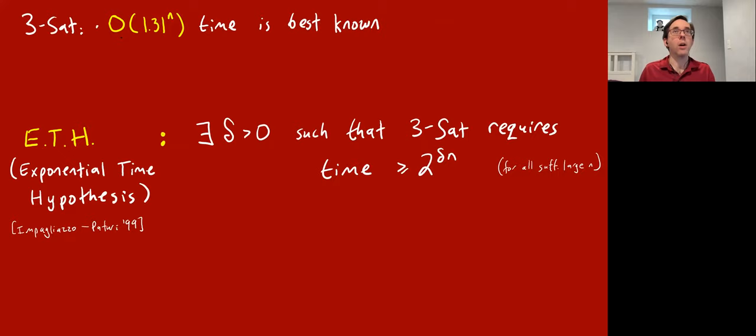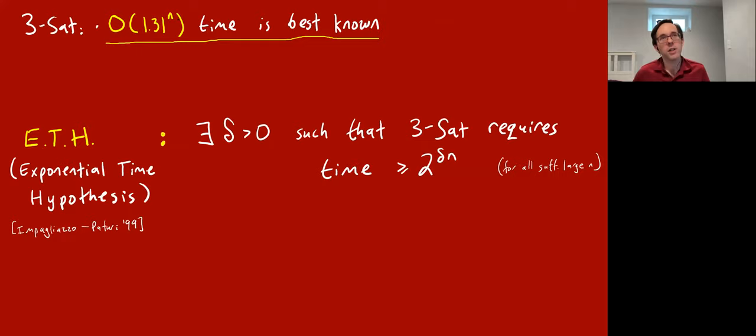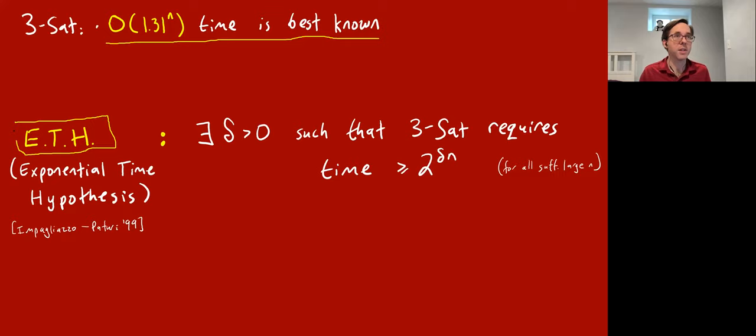So 3-SAT we know is solvable in better than 2^n time — it's even solvable in 1.3^n time. But can you solve it a lot better? Can you solve it in 2^(√n) time maybe? We don't know any algorithm like that. We don't know any algorithm that solves it in 2^(n^0.99) time. After a lot of work, people couldn't do it. So Impagliazzo and Paturi in 1999 made an assumption called the ETH — the Exponential Time Hypothesis — which simply says 3-SAT takes at least 2^(0.0001 · n) time, or more accurately, there exists some universal constant delta such that 3-SAT needs time 2^(δn) for all sufficiently large n.